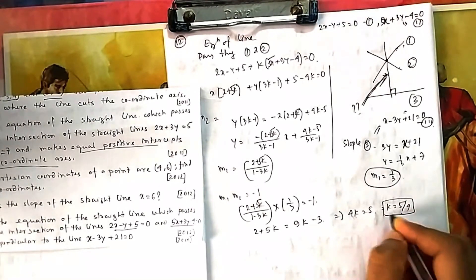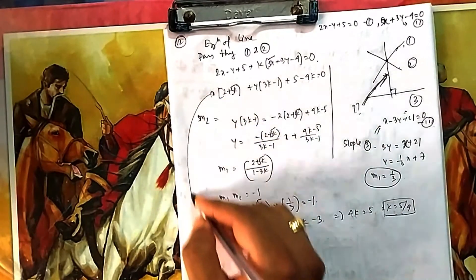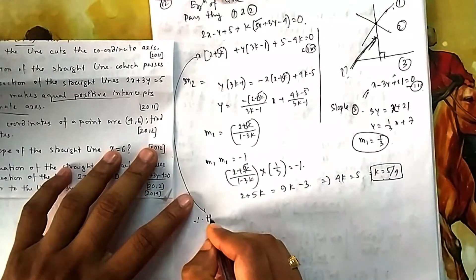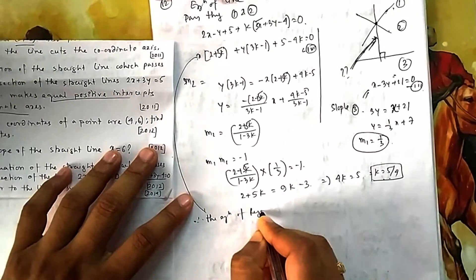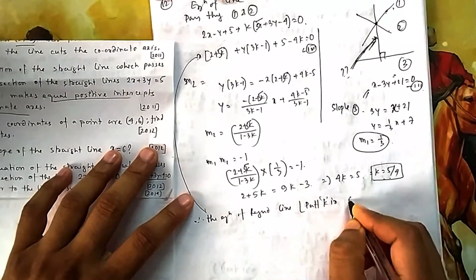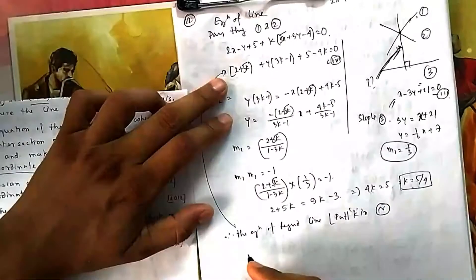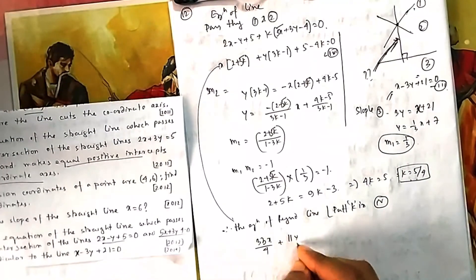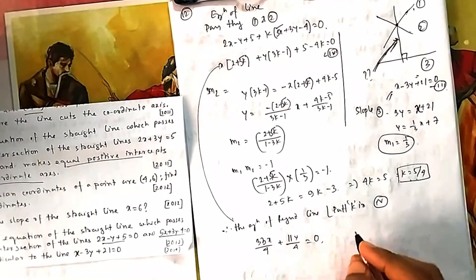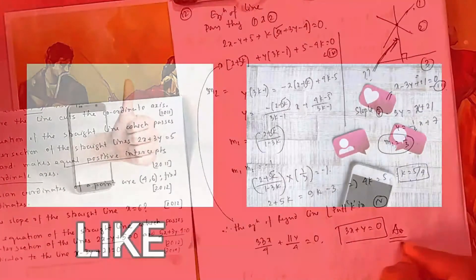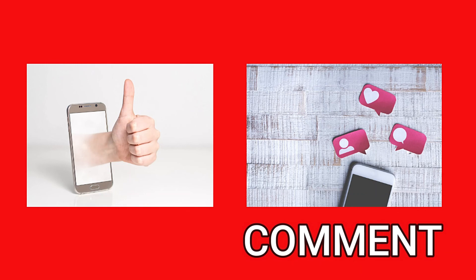We were not asked to find k but to find the equation of the required line. Substituting k equals 5/4 back into the family-of-lines equation (equation 4) gives the required line. After simplification, the equation comes out as 3x plus y equals 0. Please check the calculations, and if anything is wrong mention it in the comment box. If you like the video, press the like button and leave your valuable comments.